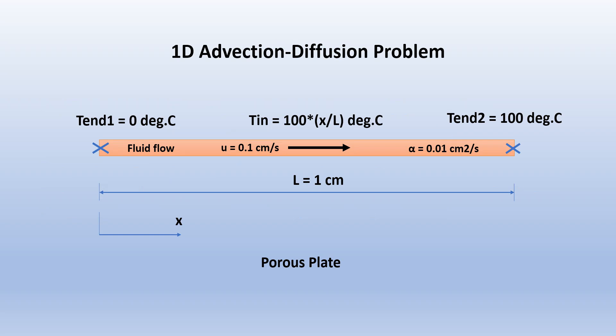Our problem involves a porous plate one centimeter long with a fluid flowing through it at a convection velocity of 0.1 centimeter per second. The thermal diffusivity alpha of the fluid is 0.01 centimeter squared per second. The temperature at one end of the plate is maintained at zero degrees Celsius and at the other end at 100 degrees Celsius. The initial temperature varies linearly according to T_initial equals 100 times x degrees Celsius.